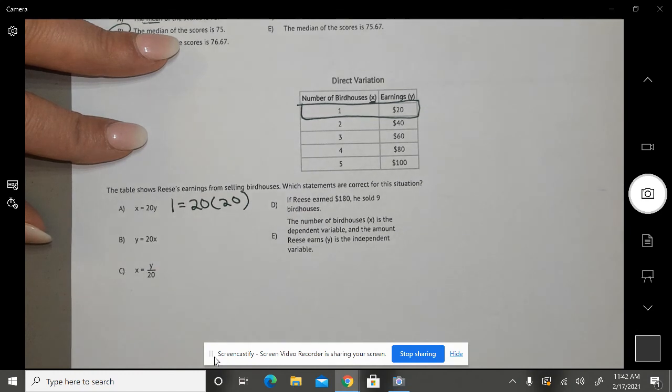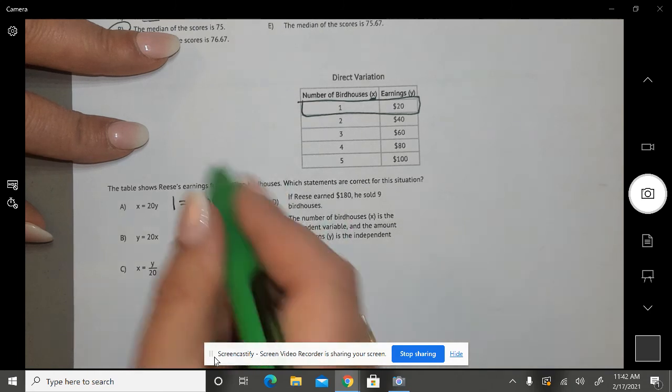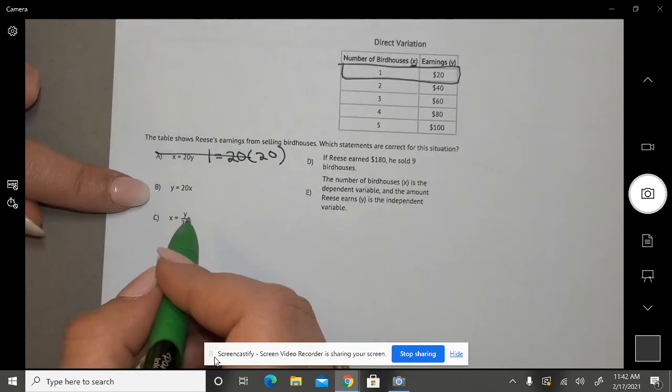So if I plug that in, X is 1 and Y is 20. Does 20 times 20 equal 1? No. So is that true? No.